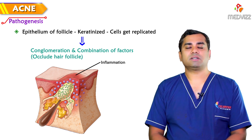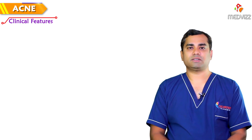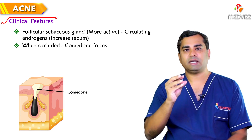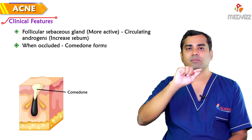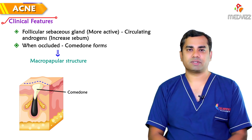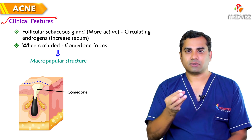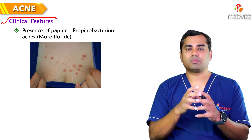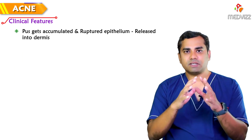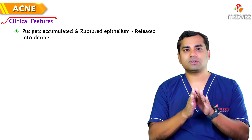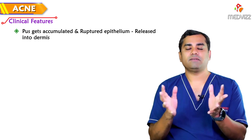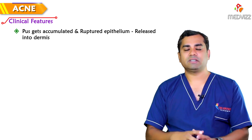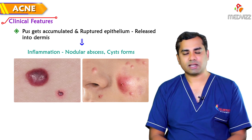Why is this pathogenesis important? It is directly related to the clinical features. When the follicular sebaceous gland is occluded due to androgen-driven sebum increase, a comedone forms — a micropapular structure just above the skin surface. When Propionibacterium acnes enters, a papule forms; when more bacteria proliferate, a pustule forms. When pustular contents rupture into the dermis, inflammation sets in, forming a nodular abscess, and eventually cysts can form.